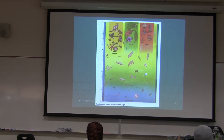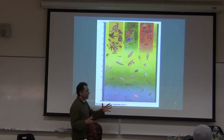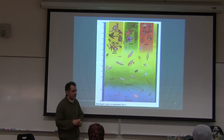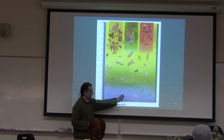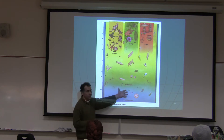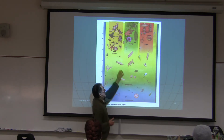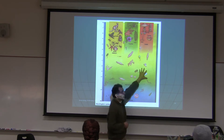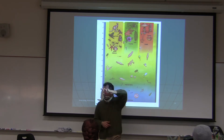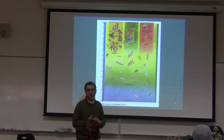These next few slides are about classification. Robert Whittaker, back in the 1960s, proposed that eukaryotic cells evolved from prokaryotic cells. Eukaryotic cells then evolved into animals, plants, and fungi. That's the old five kingdom classification, showing how these five kingdoms are related to each other.